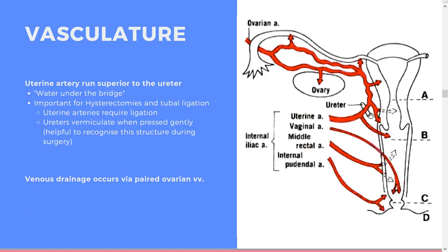The uterine artery has a squiggly appearance — that's how you recognize it intraoperatively. The uterus and vagina are divided into three parts: the ovarian artery supplies the upper part, the uterine artery supplies the uterus and cervix, the vaginal artery supplies the vagina, the middle rectal artery goes posteriorly, and the internal pudendal artery supplies the external genitalia.